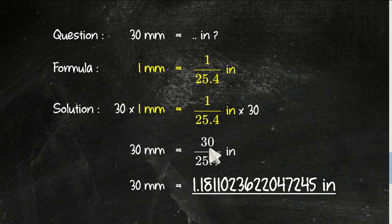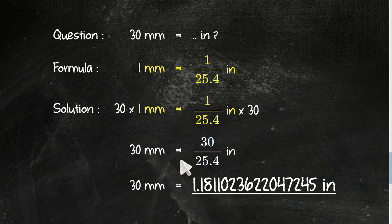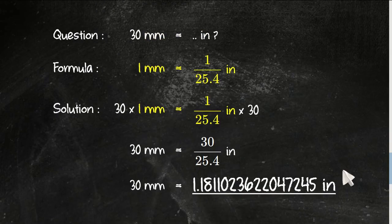30 over 25.4 inches equals 1.181102362204724, and that's all.